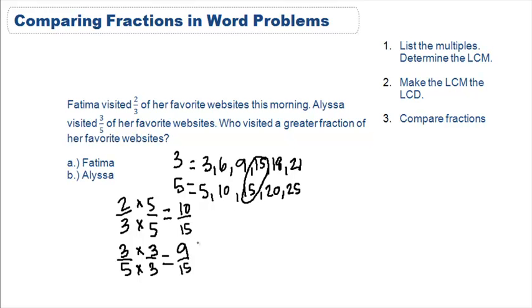Now that our fractions are over the same denominators, we can compare who visited a greater fraction of their websites. We see that ten is greater than nine.